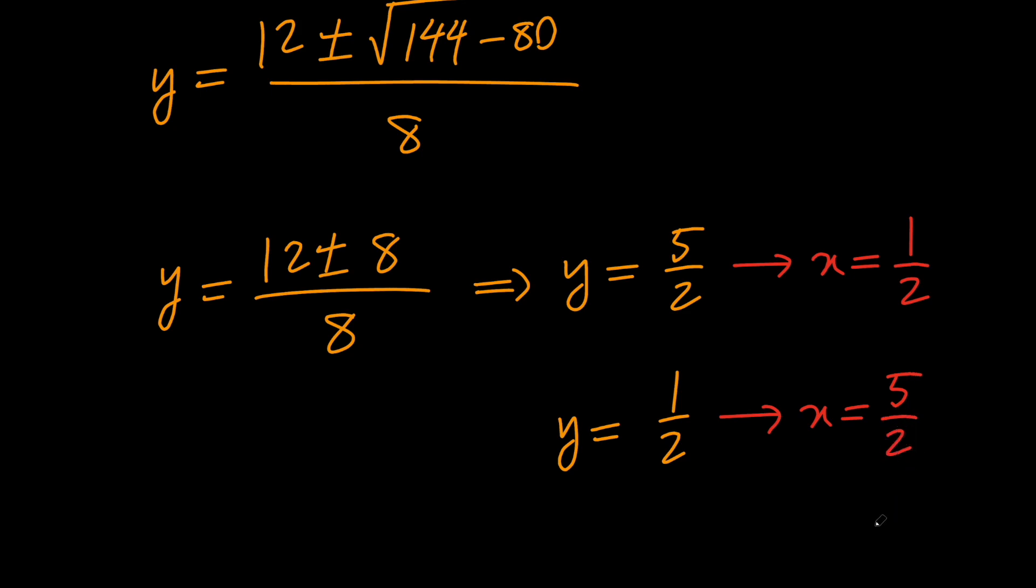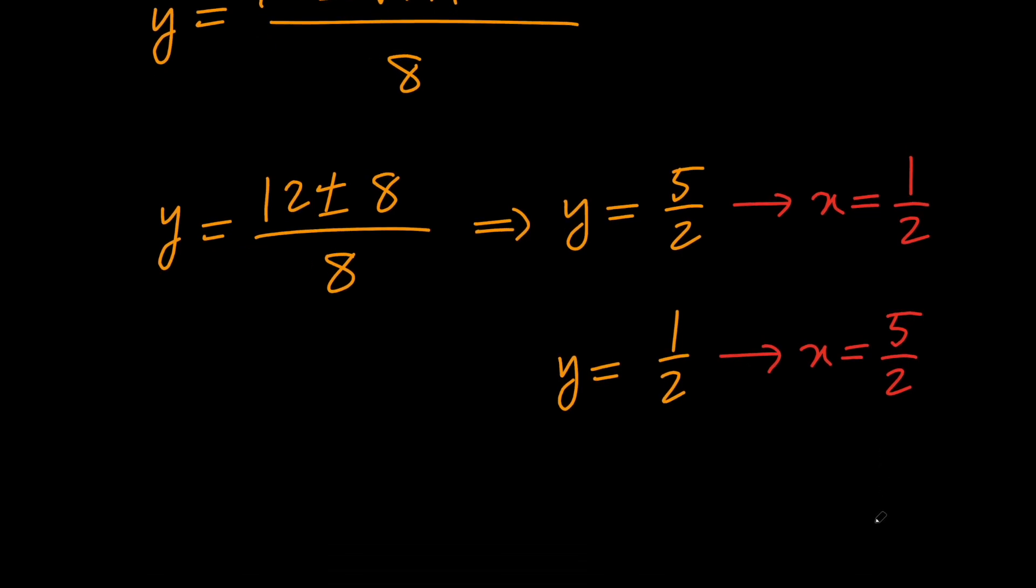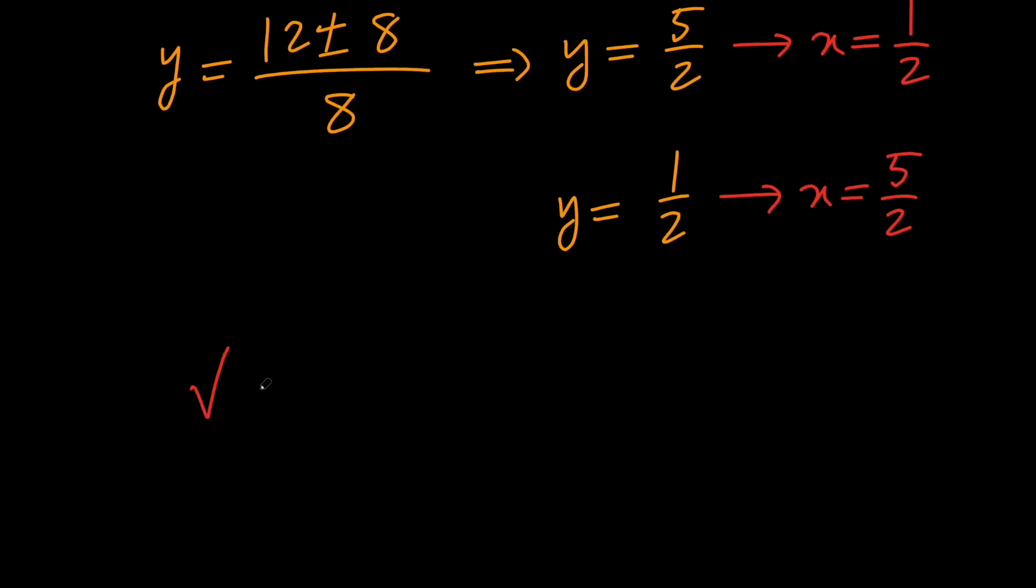This means that one of them has to be 1 over 2, and the other one has to be 5 over 2. But remember that the square root of 3 plus root 5 was equal to the square root of x plus the square root of y.